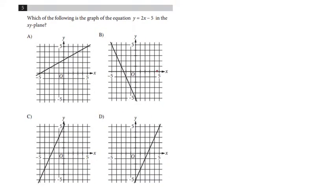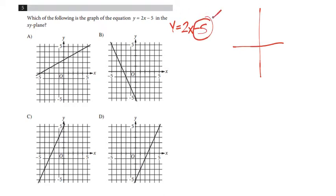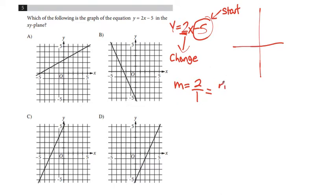Number 5: which of the following is the graph of the equation y equals 2x minus 5 in the xy plane? In our y equals mx plus b equation, we first think about our starting point, which is our y-intercept — it's always where we start. The slope is how we change. The slope here is 2, and we think of slope as a fraction: two over one. Slope is rise over run — the top number is vertical displacement and the bottom is horizontal displacement.